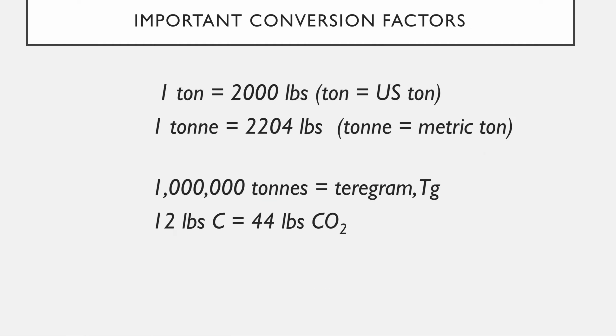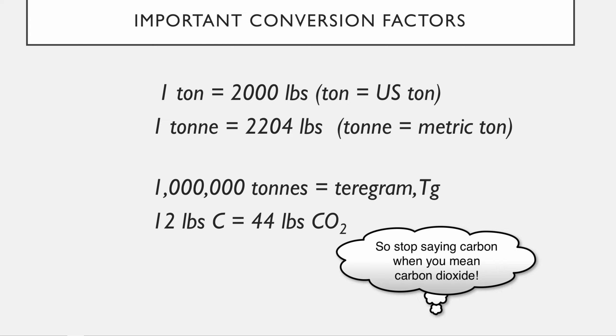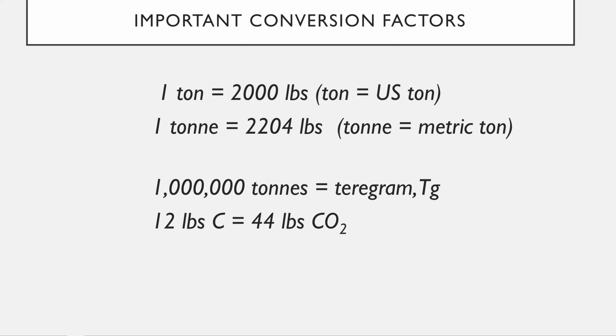Some useful conversion factors: a US ton is 2,000 pounds; a metric ton is 2,204 pounds. A teragram is a million metric tons. Critically — and this comes up in homework and on exams — carbon and CO2 are not the same thing, and CO2 weighs more than carbon alone. Specifically, 12 pounds of carbon equals 44 pounds of CO2.